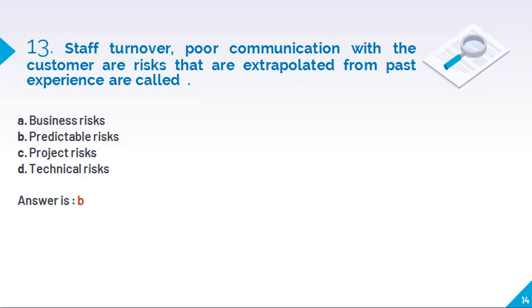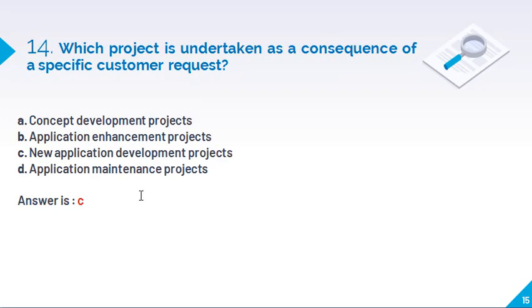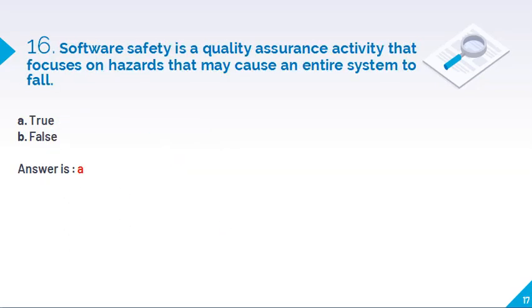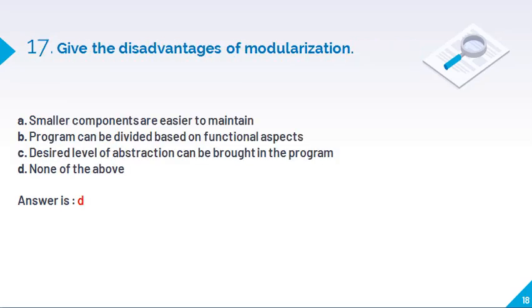So that is the predictable risk. Which project is undertaken as a concept of space? So that is the specific customer request, so new application development project. Software safety is a quality assurance activity that focuses on hazards that may cause an entire system to fail. So true.